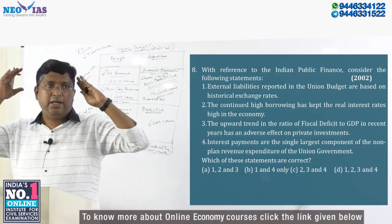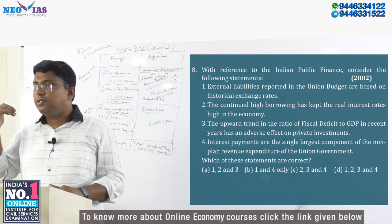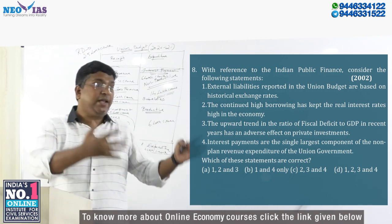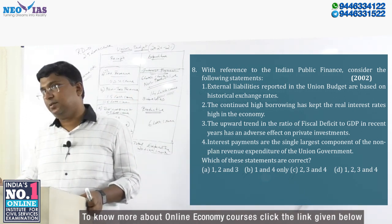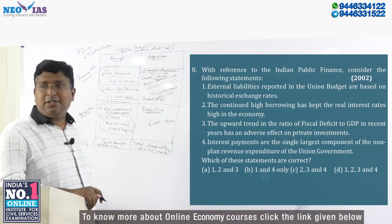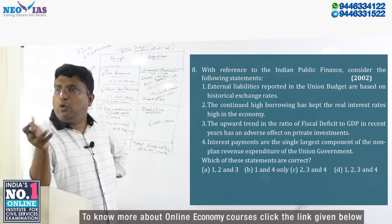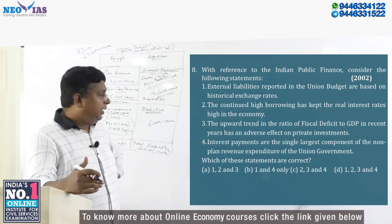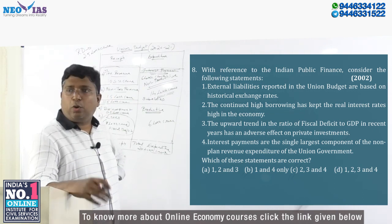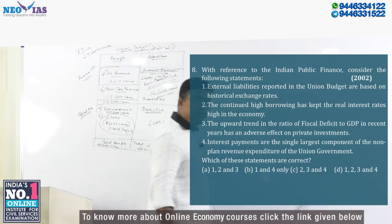I want you to understand with conceptual clarity — what is the problem of fiscal deficit? If the fiscal deficit is high, the problem is the real interest rate will be higher, and it will affect private investment. These are all negatives for an economy, other than the impact on the government like higher interest payments. Now the fourth statement will decide our answer: interest components are the single largest component in revenue expenditure. Interest payment is not only the largest in revenue expenditure — if you take any expenditure, interest payment is the largest component. So the fourth statement is also correct. The answer is 1, 2, 3, and 4.